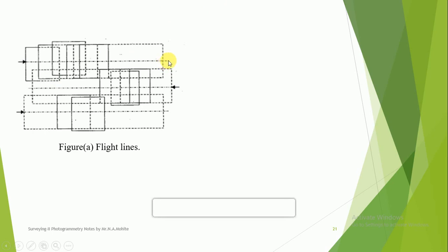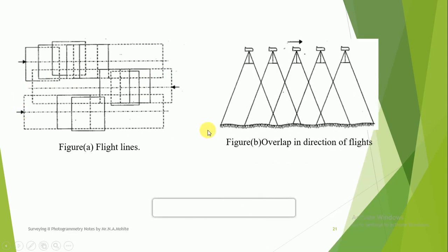The figure shows an area to be surveyed. The aircraft travels in one direction, takes a turn, comes back, and continues taking photographs. In the forward direction, longitudinal overlap is captured one over the other. When traveling in the second flight line, there is also overlap over the previous flight, which is the side lap. The overlap in the direction of flight is the longitudinal overlap, visible in each photograph.